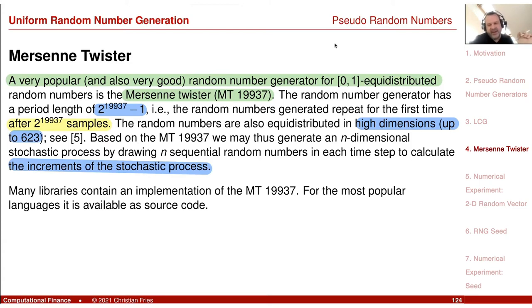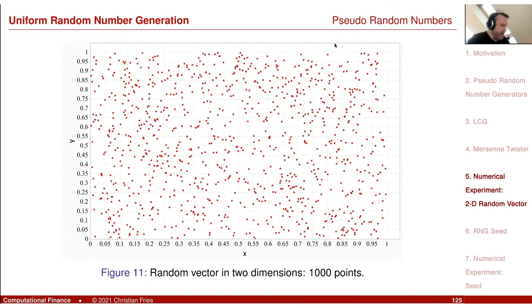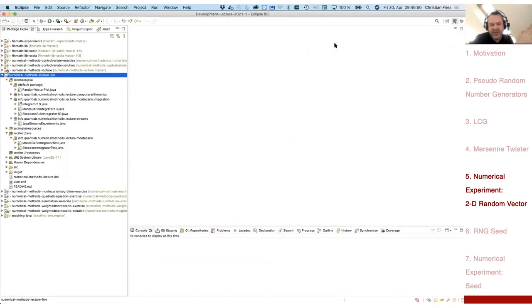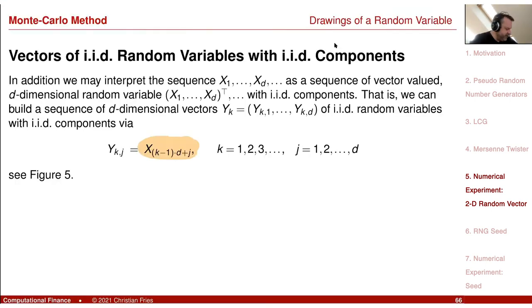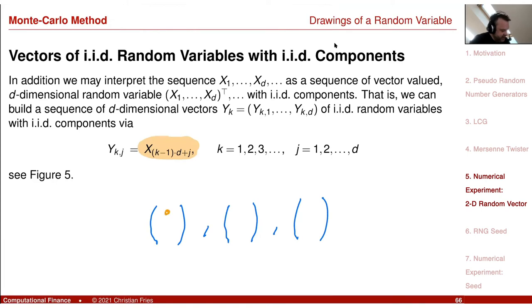That's just mentioning another generator, which I sometimes use — Mersenne Twister. I'd like to finish with a small numerical experiment. Now that we have random number generators, let's recall from the beginning of the lecture that we generate a sequence of random vectors by populating the components one by one using a one-dimensional sequence.